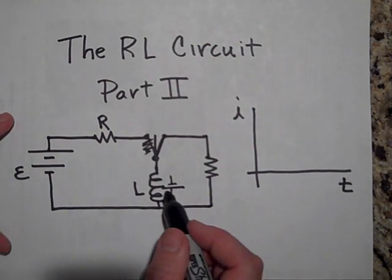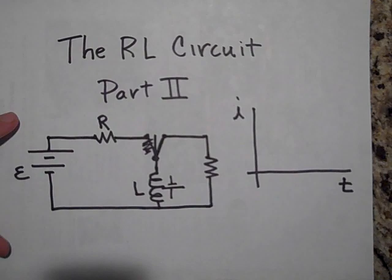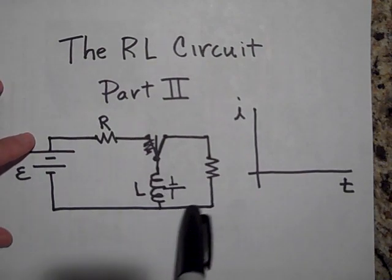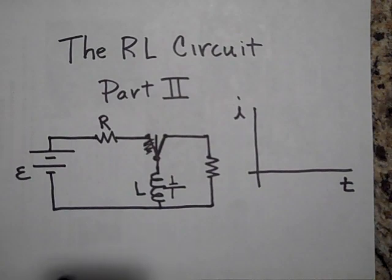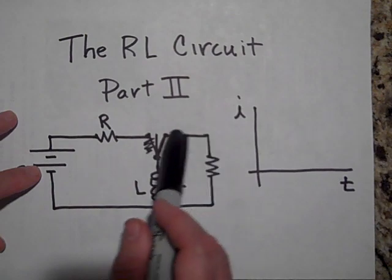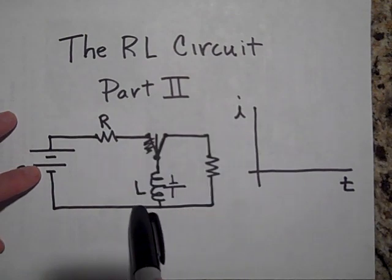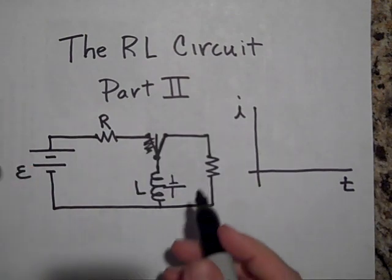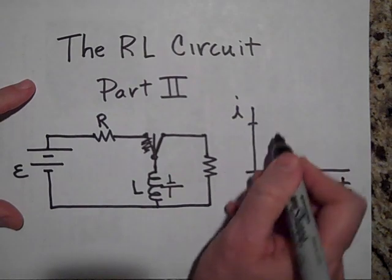As you might guess, it's going to try and push the current around the circuit, but there'll be a point where it just is going to run out of energy and the current will be zero. In fact, it's going to be a decay graph. It's going to look like this.